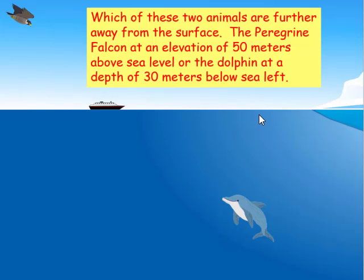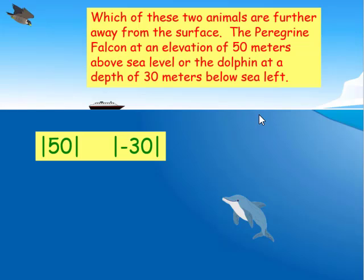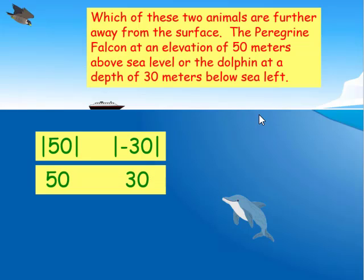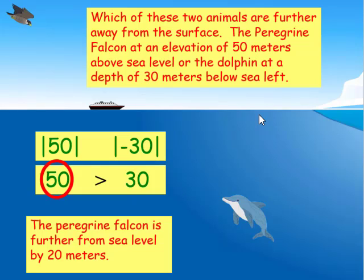Which of these two animals is further away from the surface? The peregrine falcon had an elevation of 50 meters above sea level, and the dolphin was at a depth of 30 meters below sea level. This is a case where we use absolute value. We look at the absolute value of 50 and the absolute value of negative 30. The absolute value of 50 is 50 and the absolute value of negative 30 is 30. Since 50 is greater than 30, the peregrine falcon is further from sea level by 20 meters.